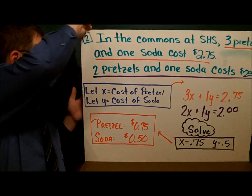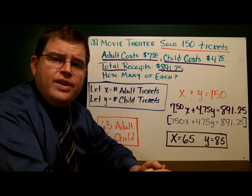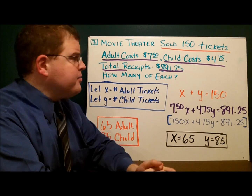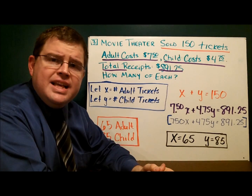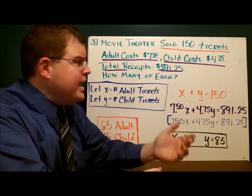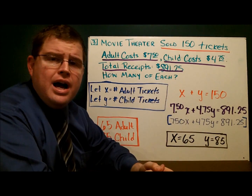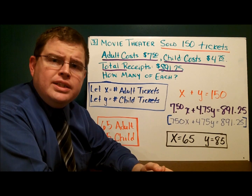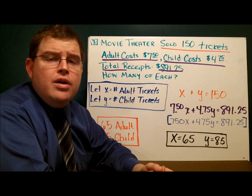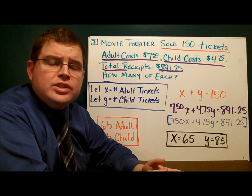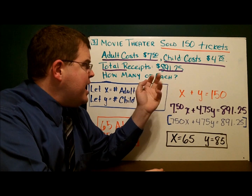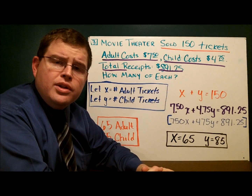In our third example, we have a movie theater selling tickets. They sold a total of 150 tickets one evening. An adult ticket costs $7.50 and a child ticket costs $4.75. At the end of the night, the manager counted the money and had $891.25. He wants to know how many adult tickets and how many children's tickets were sold, but the attendant didn't keep track.